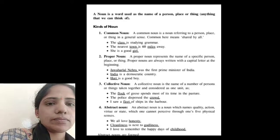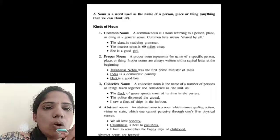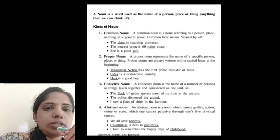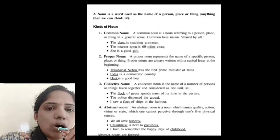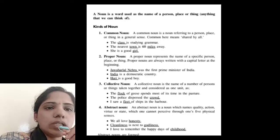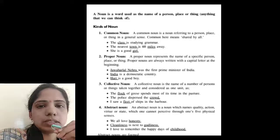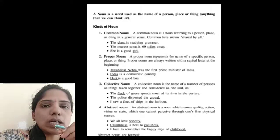Collective noun. A collective noun is the name of a number of persons or things together. For example, the flock of geese spend most of its time in the pasture. The police dispersed the crowd. I saw a fleet of ships in the harbor. These are the examples for collective noun.